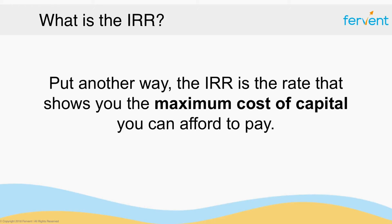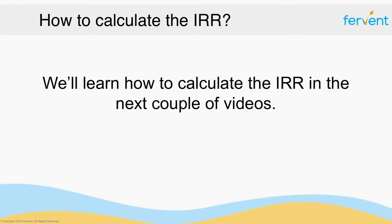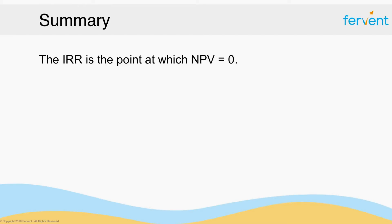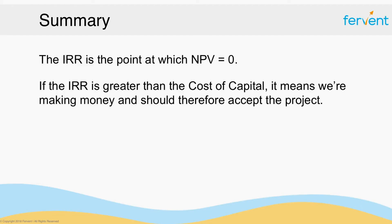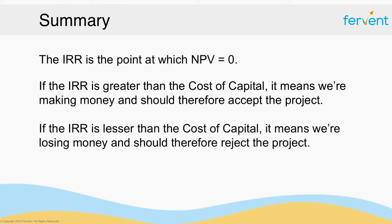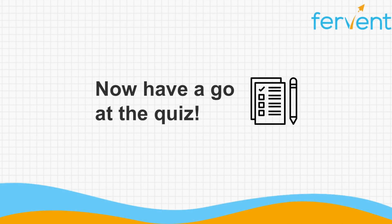Hopefully you've understood the principles behind the IRR — what it is, how it works, and what the purpose of its existence is. In the next couple of videos, we'll learn how to calculate the IRR using the equations. To summarize: the IRR is the point at which NPV is equal to zero. If the IRR is greater than the cost of capital, you're making money and should accept the project. If the IRR is lesser than the cost of capital, you're losing money and should reject the project. It's crucial that you understand this concept before moving on. Have a go at the quiz and I'll see you in the next video.